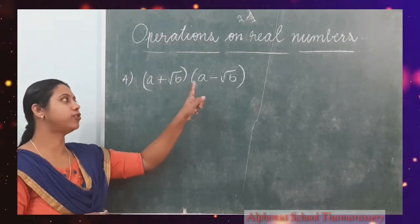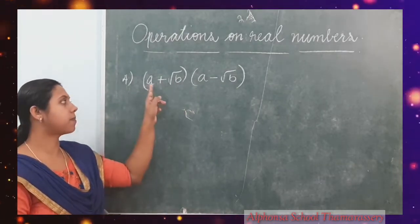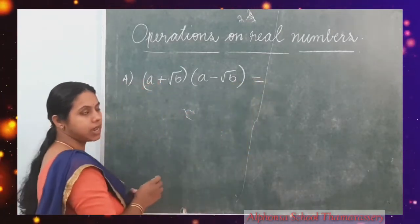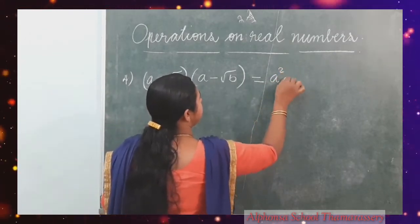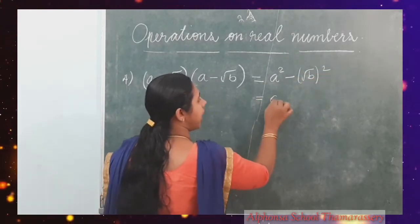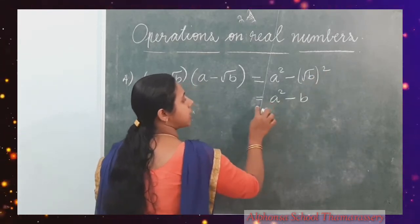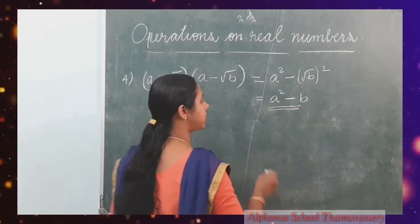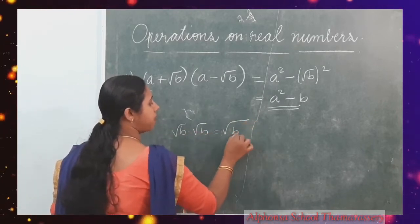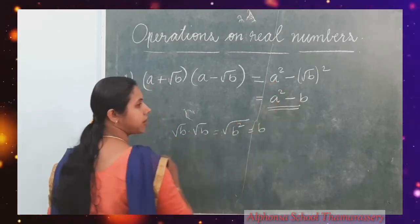Also, A plus root B into A minus root B is in the form of A plus B into A minus B, so it equals A square minus root B all square. Root B all square means root B into root B, which is root of B squared, equal to B. So we get A square minus B.